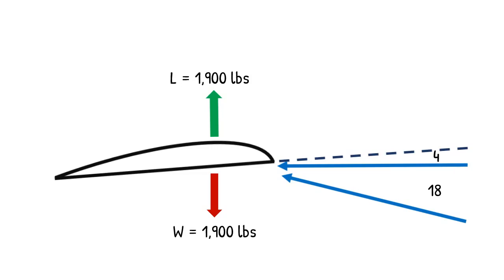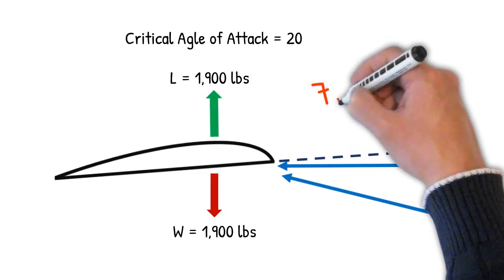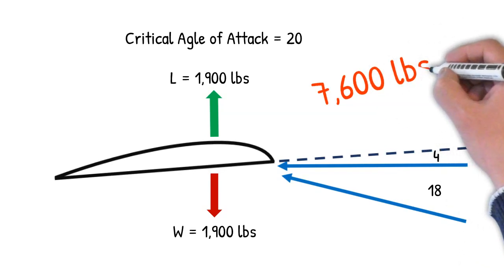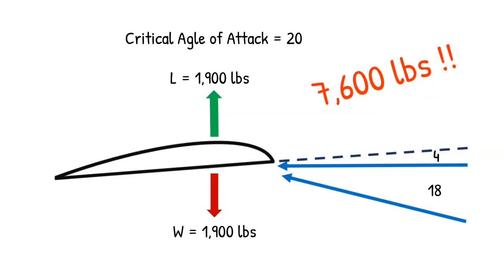Because remember, in this scenario, we're only at 18 degrees. We haven't exceeded the critical angle of attack of 20 degrees. 4 times 1,900 is an expression of 7,600 pounds on the wings and airframe. All of this stress can happen in cycles of only a few seconds, which can cause incredible stress on the wings and airframe.